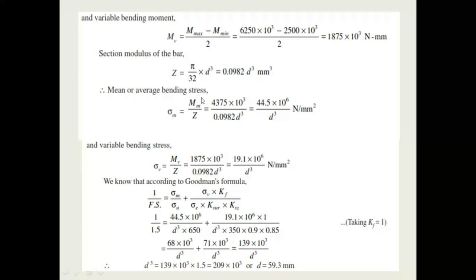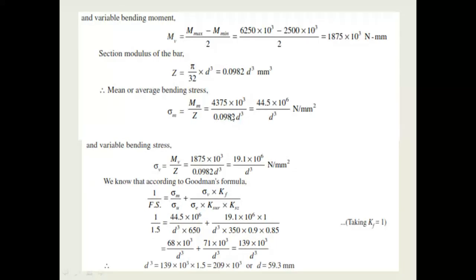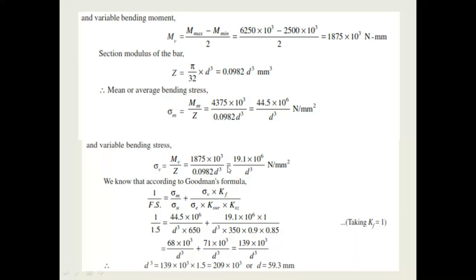The mean bending stress sigma_m = M_mean / Z = 4375 × 10³ / (0.0982 d³) = 44.5 × 10⁶ / d³ N/mm². The variable bending stress sigma_v = M_v / Z = 19.1 × 10⁶ / d³ N/mm². Both stresses are expressed in terms of d³.